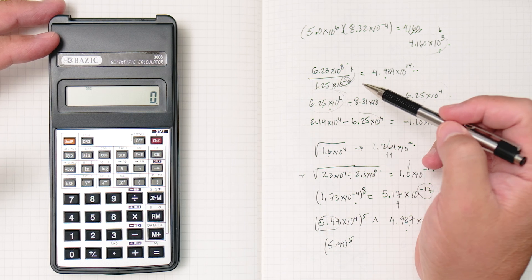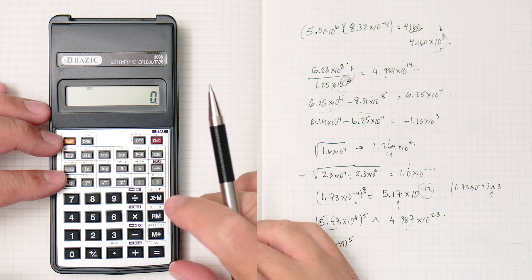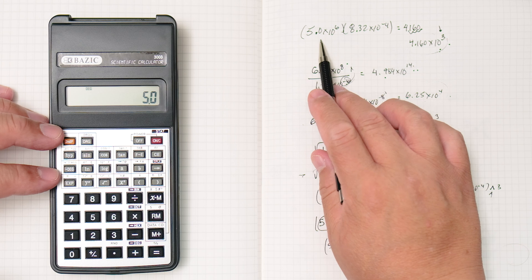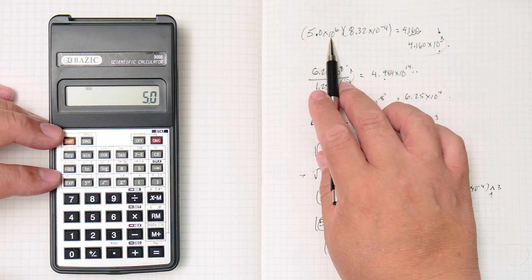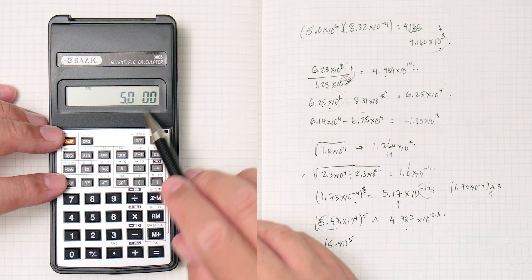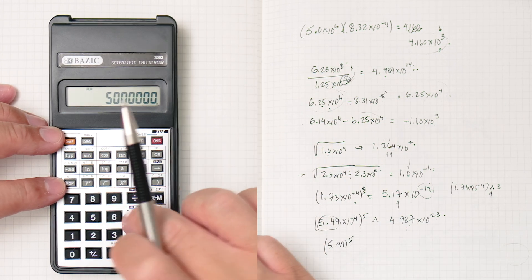And when we do scientific notation calculations, there's going to be additional steps. Okay, so here we go, 5.0, let's do this one, 5.0 times 10 to the 6. We have exponent, times 10. Exp is times 10, and then we're going to put 6 times, we're going to put times.